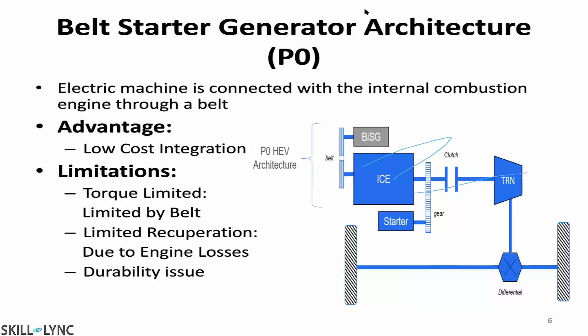The first architecture is P0, also called the belt starter generator architecture. Here we connect the electrical machine to the engine through a belt. The advantage is low-cost integration — we don't need to make any changes to the existing powertrain; we can simply add the motor to the engine with a belt. The limitations are that torque is limited because of the belt's constraints, recuperation is limited due to engine losses, and there is a durability issue with the belt.